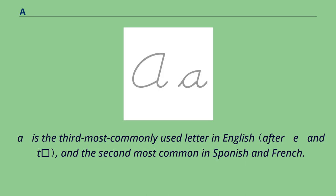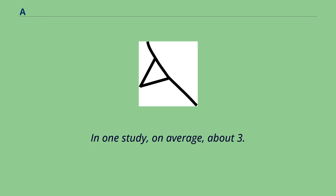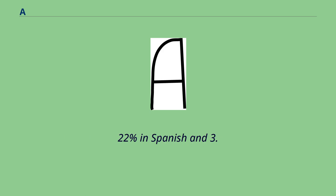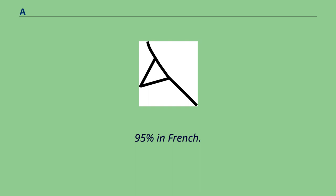A is the third most commonly used letter in English and the second most common in Spanish and French. In one study, on average, about 3.68% of letters used in English text tend to be A, while the number is 6.22% in Spanish and 3.95% in French.